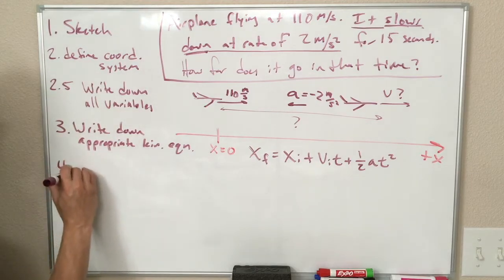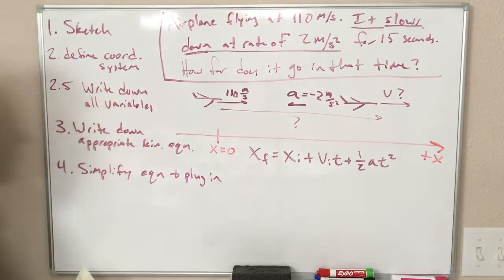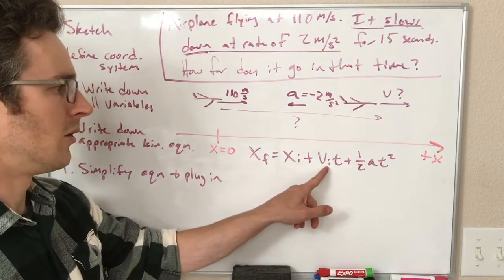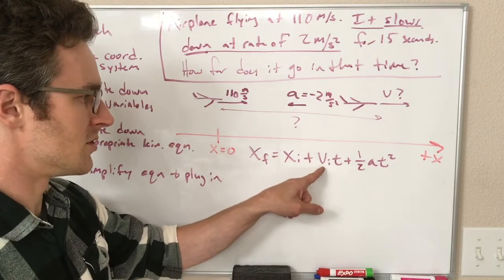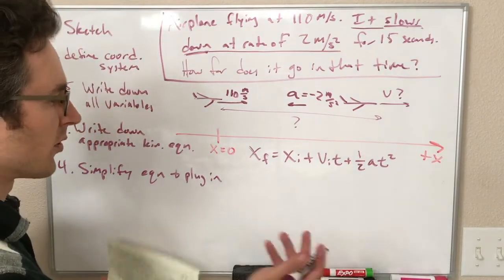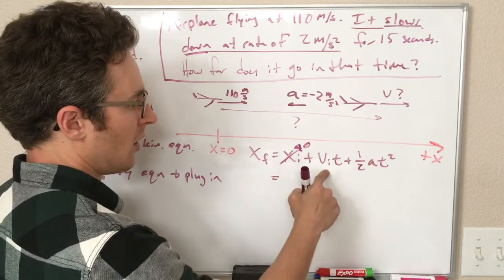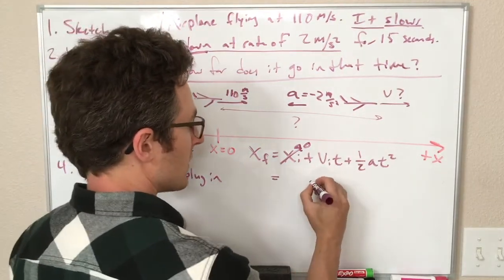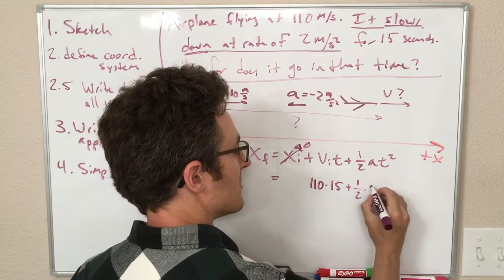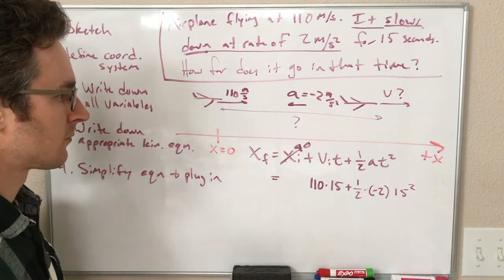So step four is to simplify the equation and plug in the variables. So by simplify, I mean sometimes large parts of the equation are just equal to zero. Like if we had a problem where V initial was zero, we wouldn't have to put the V initial, we don't have to say zero times t. Like we can just say, oh, V is zero, so that goes to zero. But V is not zero in this problem. That was just hypothetical. In this problem with our variables, there isn't that much simplifying to do. We do know X initial is zero, so we don't have to worry about that. V initial, we do know that's 110 meters per second. T is 15 seconds. And we have 1 half times A, which is minus 2, times t squared, which is 15 squared.